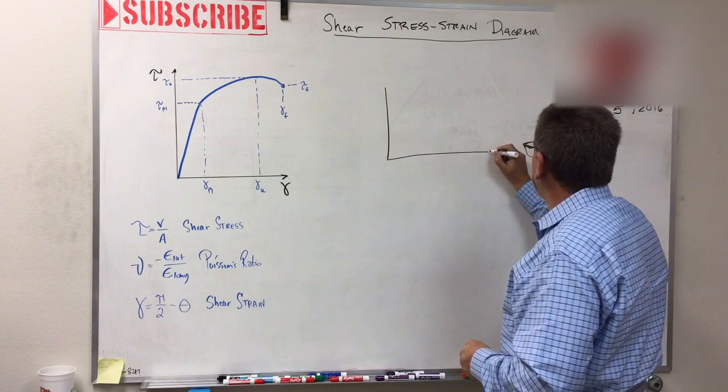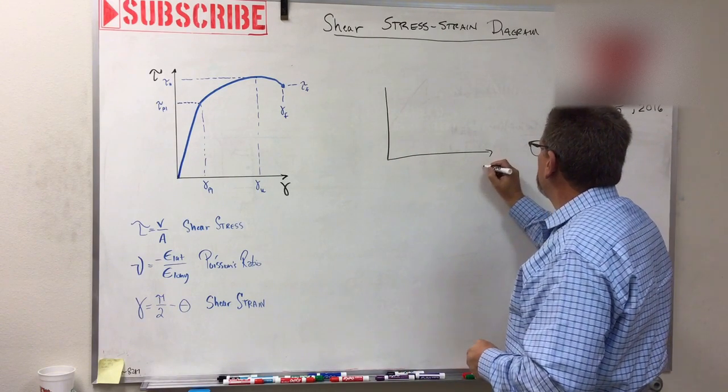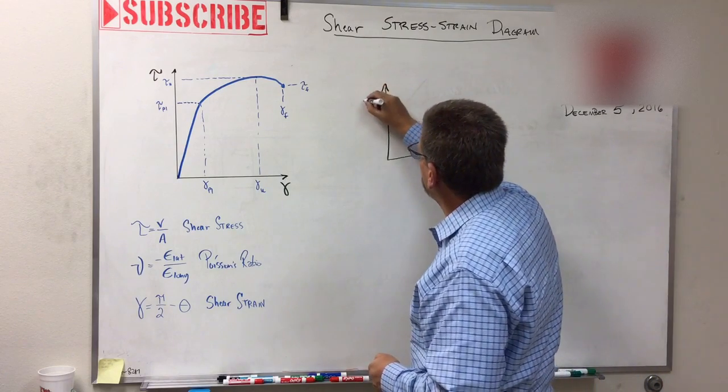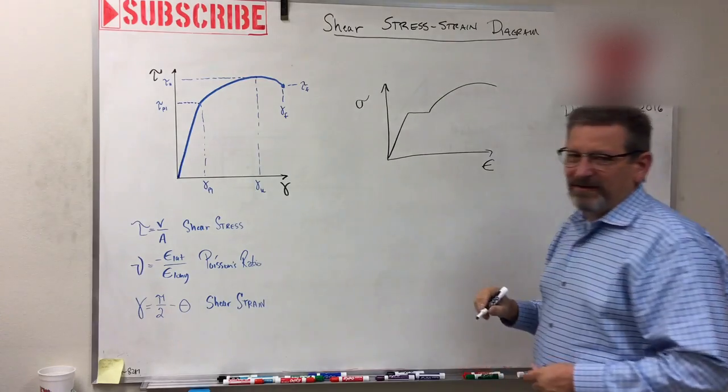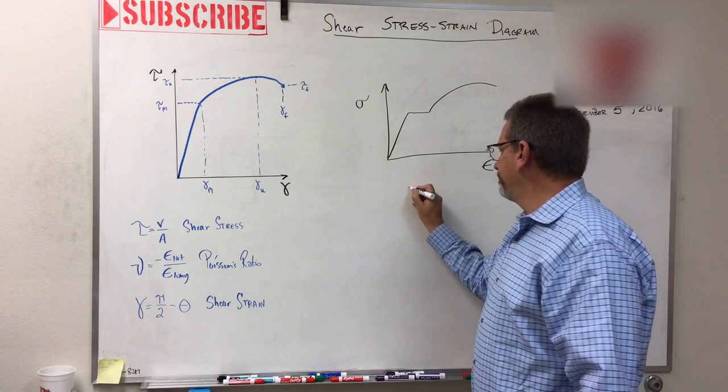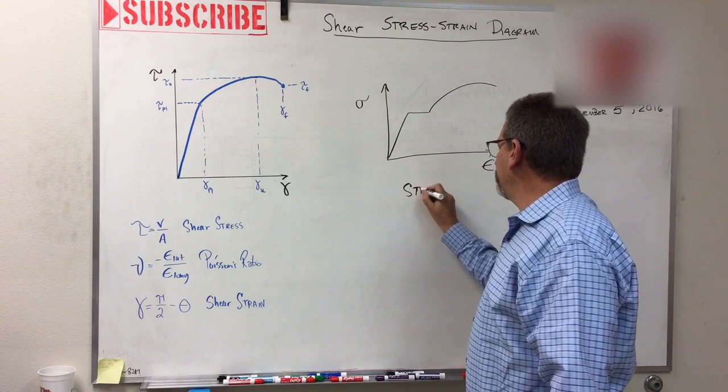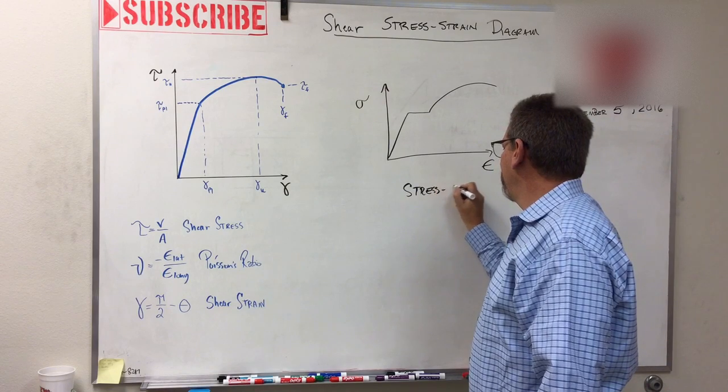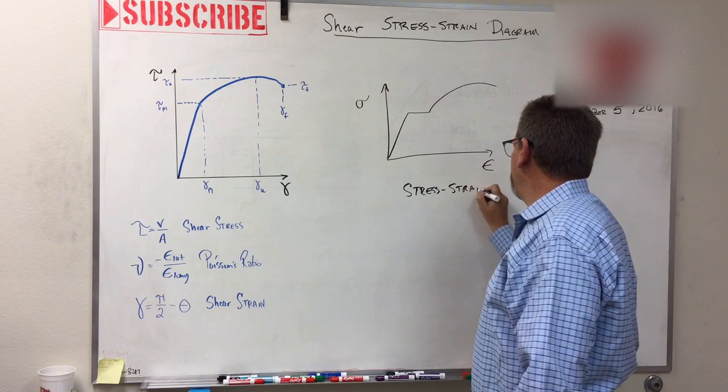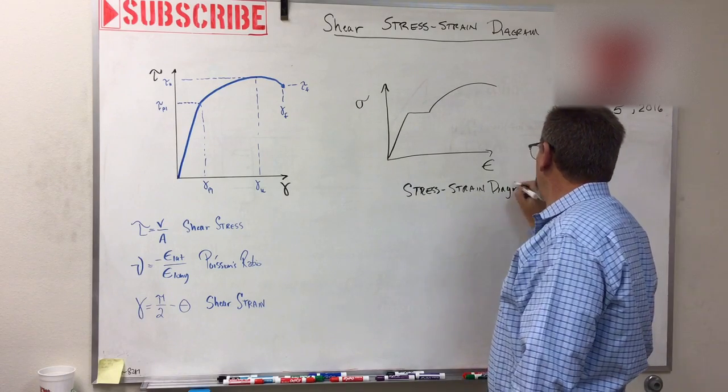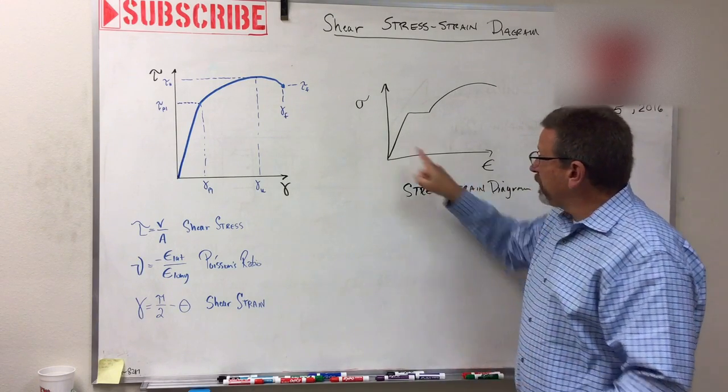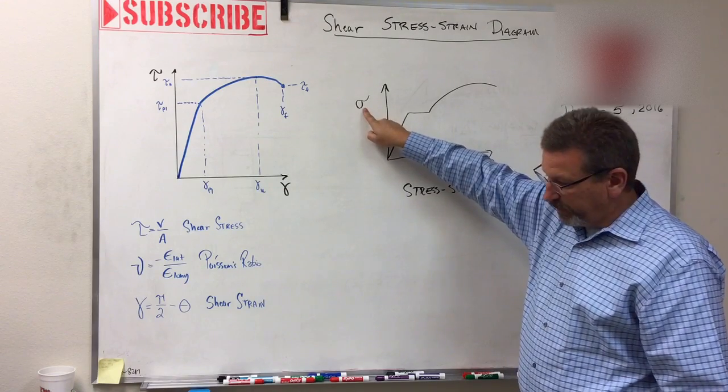This was epsilon and this was sigma, right? That was the stress-strain diagram. Just like in this diagram here, we were comparing the stress on an element to the strain in that element.